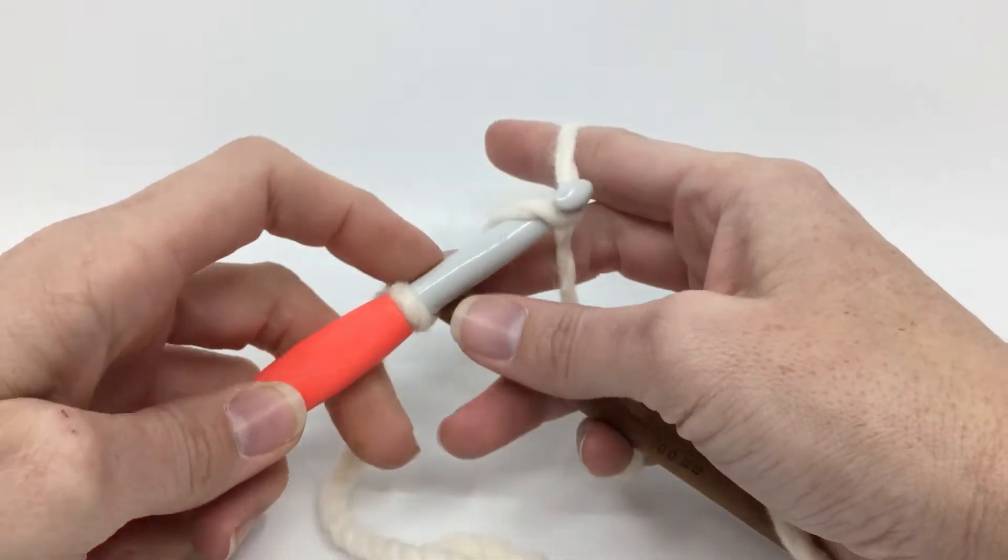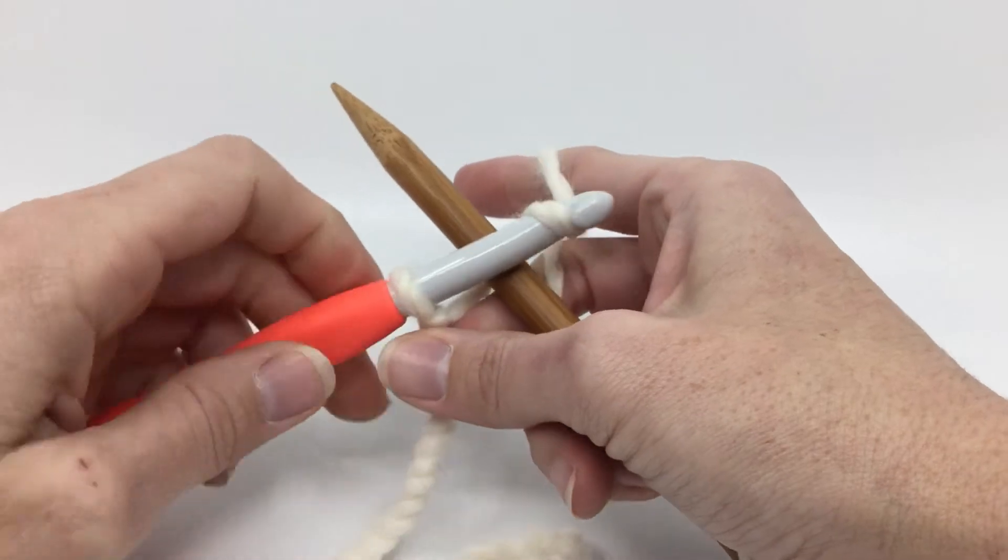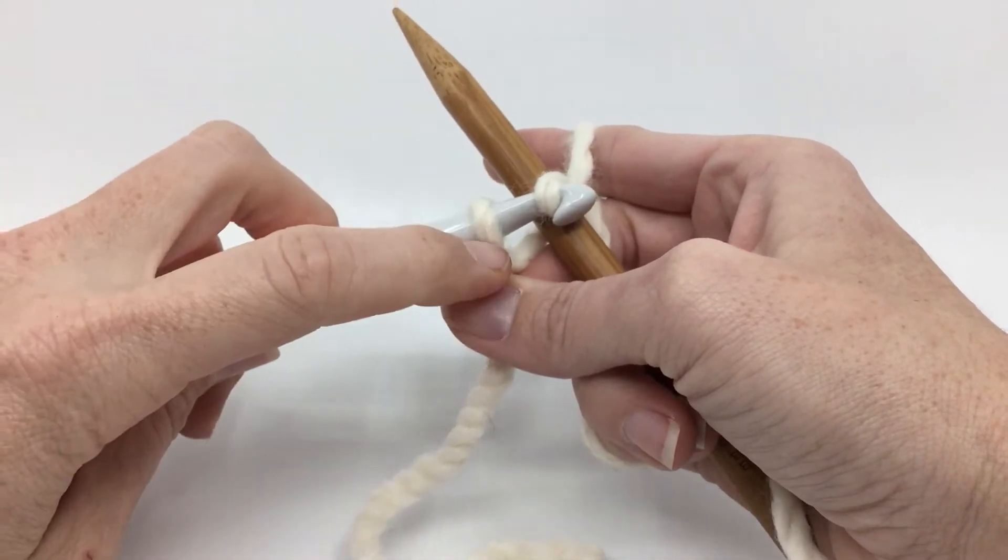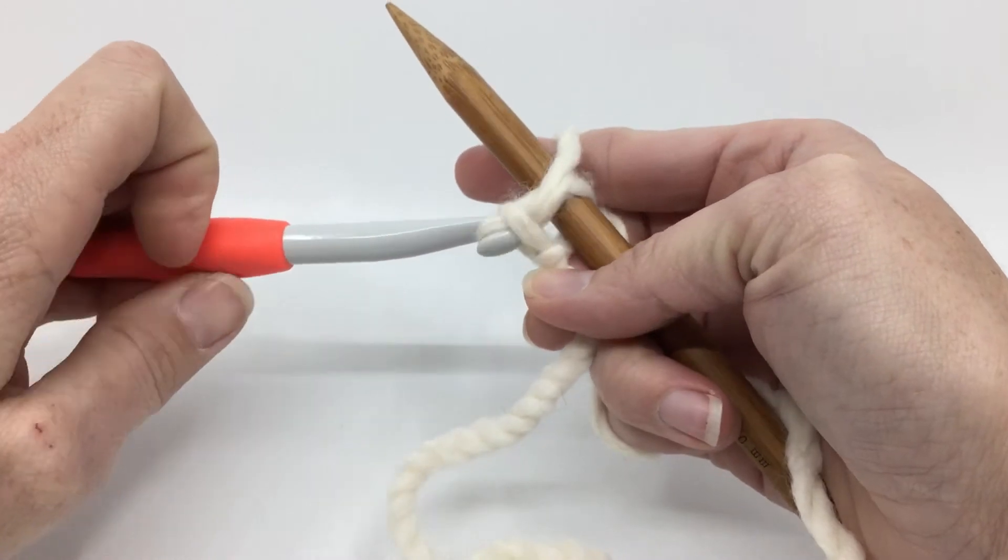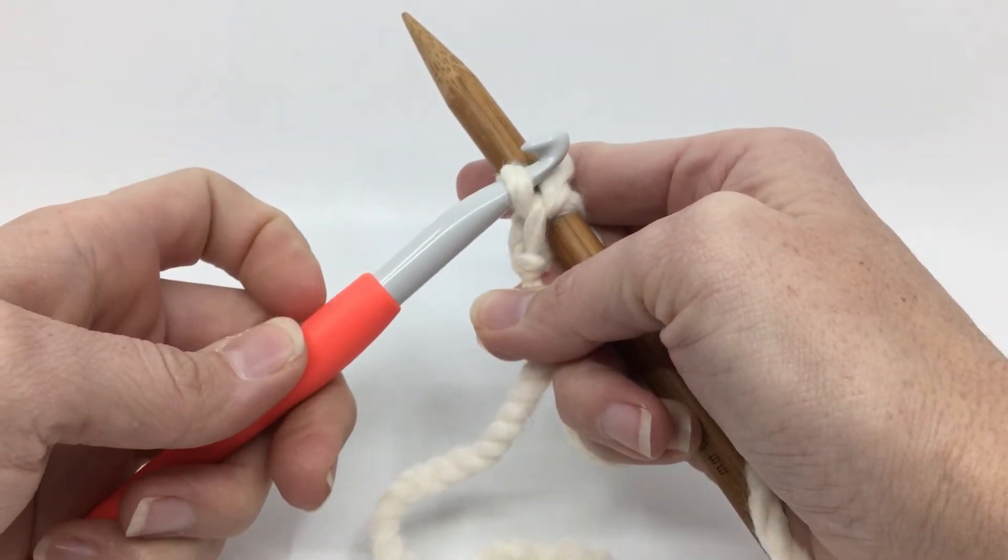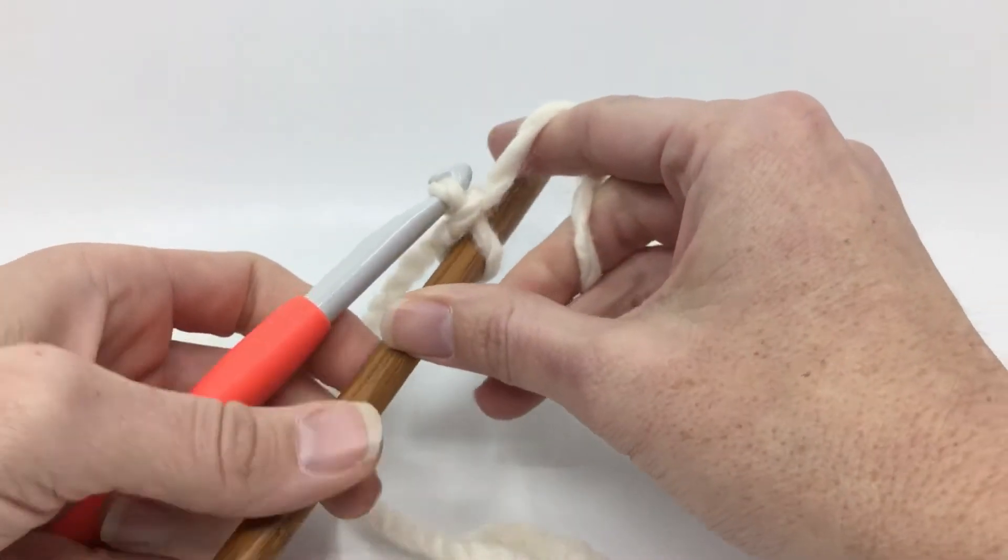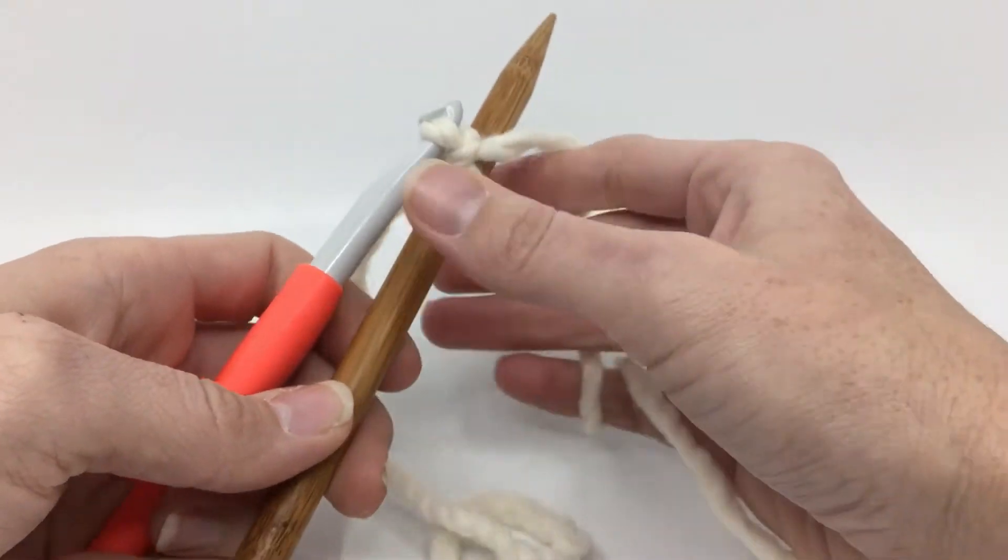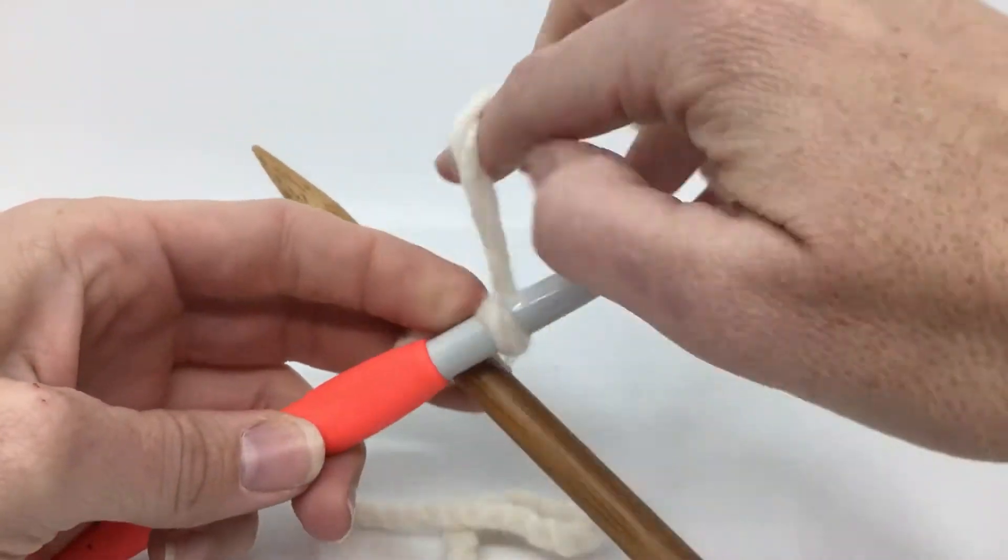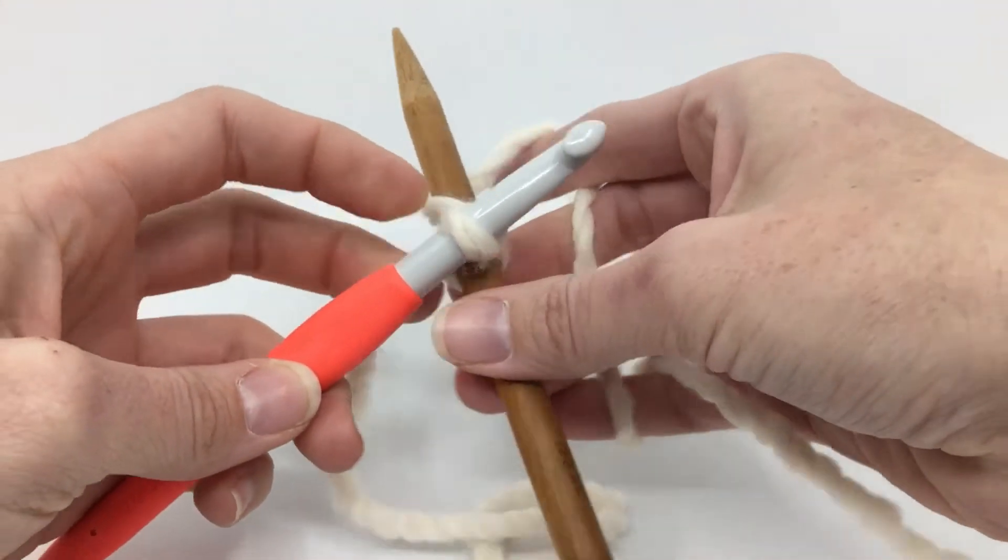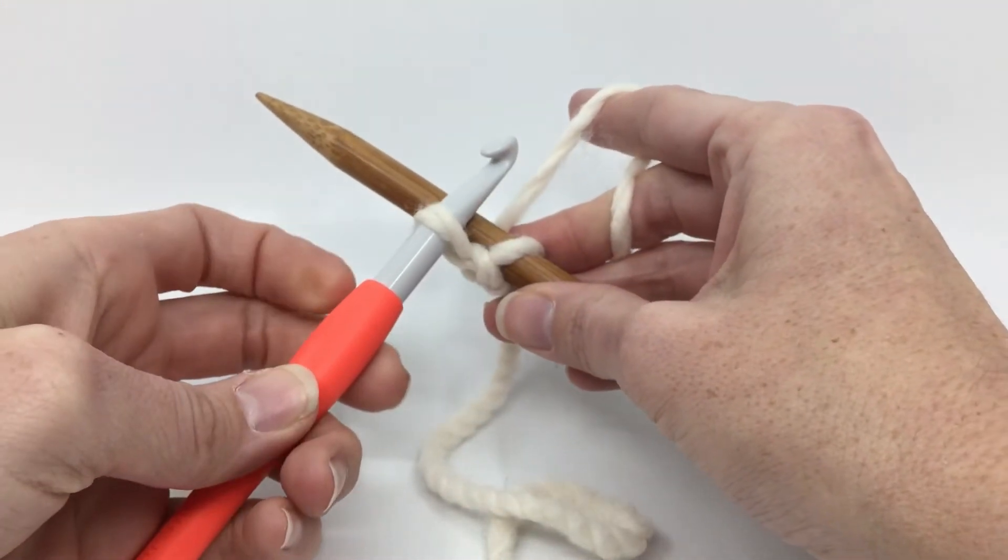Turn our hook down so we can get through the loop on our hook, just like a regular foundation chain, and pull through. We have one stitch on our hook. Our yarn's in front. It's kind of impossible to get it around our needle, so we got to move it to the back. Bring it back around your needle to start the next one.